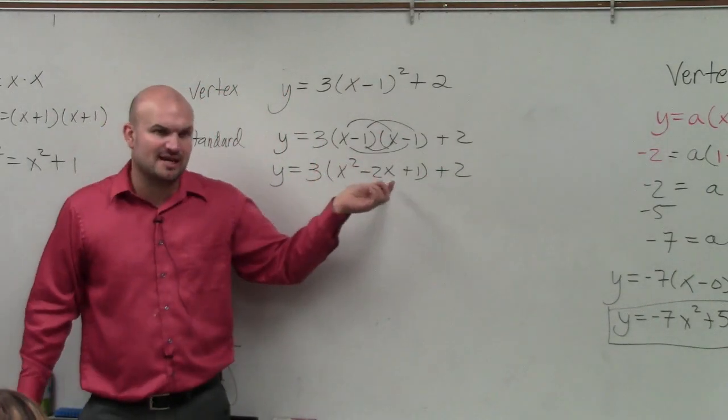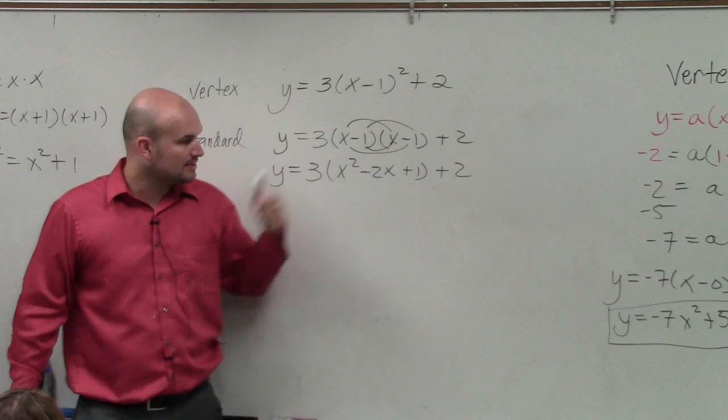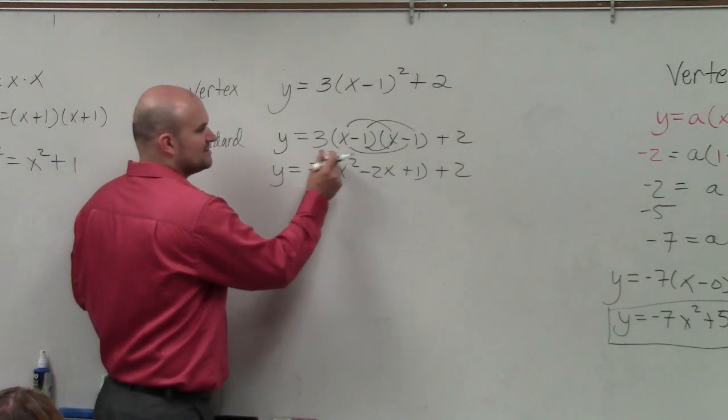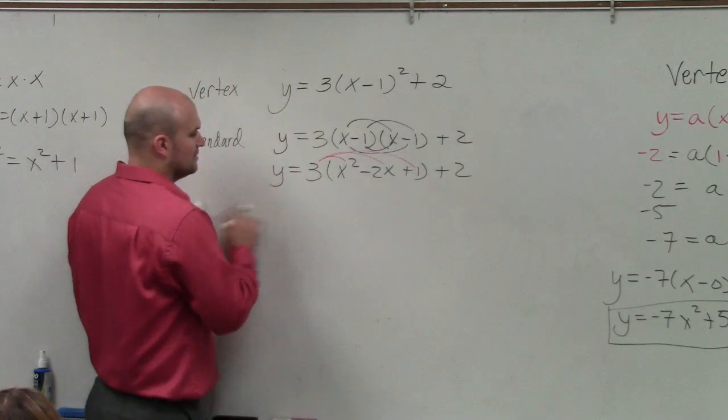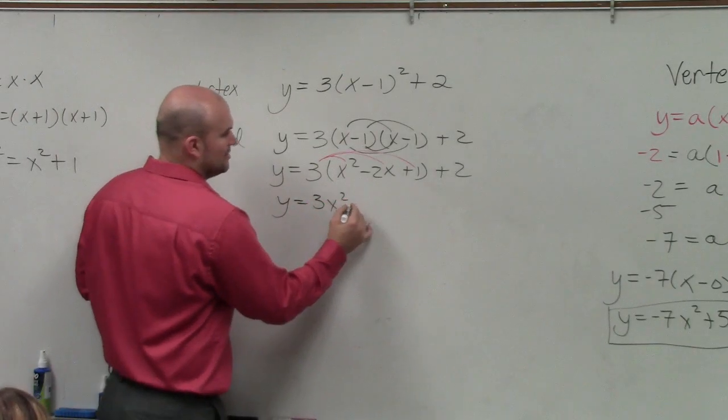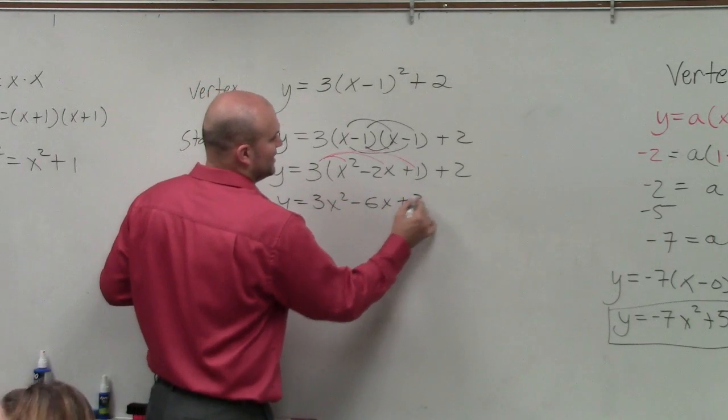So when I multiply those out, that's what I obtained. I'll have you guys check your work on your own. Then we have three times this, so we apply the distributive property. So I get y equals 3x squared minus 6x plus 3 plus 2.